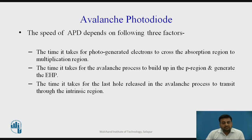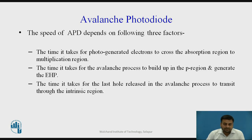Three factors affect the speed of the avalanche photodiode. First, the time it takes for photo-generated electrons to cross the absorption region to the multiplication region. Second, the time it takes for the avalanche process through impact ionization to build up in the p region and generate electron-hole pairs. Third, the time it takes for the last hole released in the avalanche process to transit through the intrinsic region.